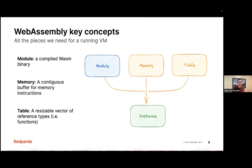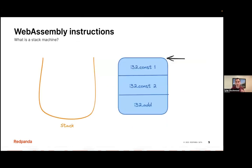Once you have the compiled format, you also need to take some host memory and give it to the VM so that the WebAssembly guest code can interact with it, and then also an instance table to store all those different function pointers. When you take those three things and combine them together, you get an actual live running instance of a WebAssembly VM. Next we'll dive a little bit more into functions and the execution of functions. WebAssembly is a stack-based model for the VM.